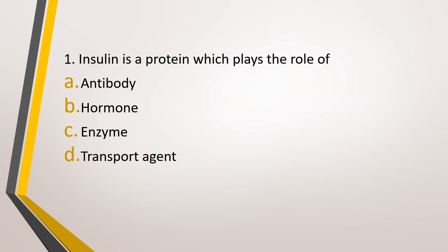Question number 1. Insulin is a protein which plays the role of: option A, antibody; option B, hormone; option C, enzyme; or option D, transport agent. The correct answer is option B — insulin is a hormone. Insulin is secreted by beta cells of islets of Langerhans of pancreas, and deficiency of insulin causes diabetes mellitus.